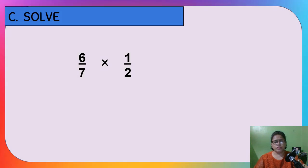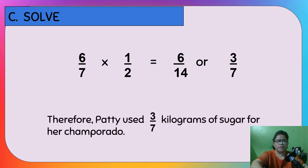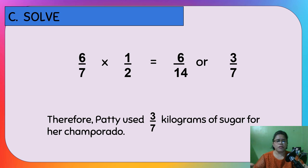Without the drawing: 6/7 times 1/2 equals 6/14. Divide both by 2, and the final answer is 3/7. Therefore, Patty used 3/7 kilograms of sugar for her champorado.